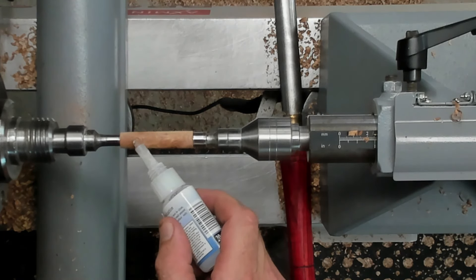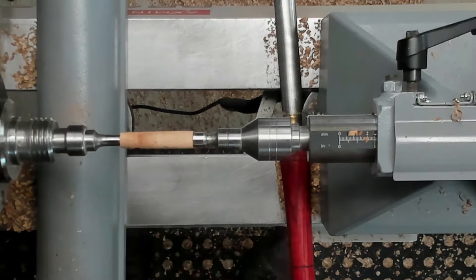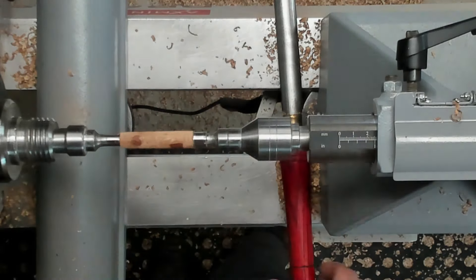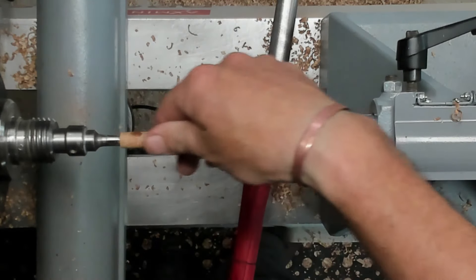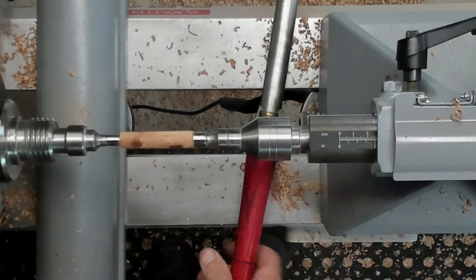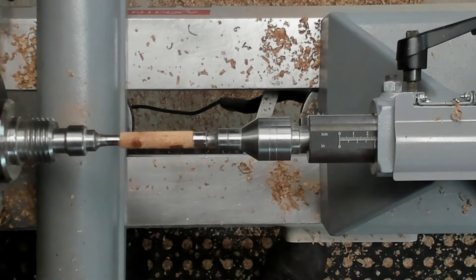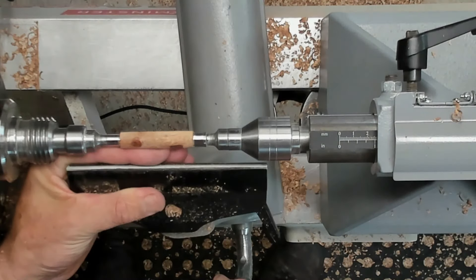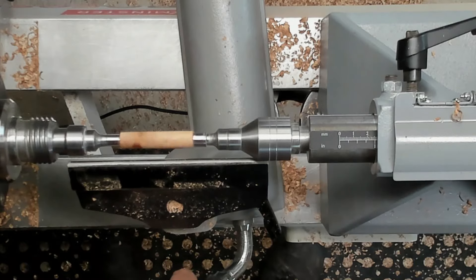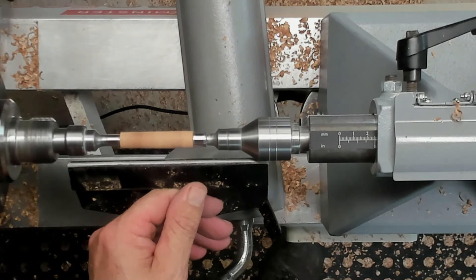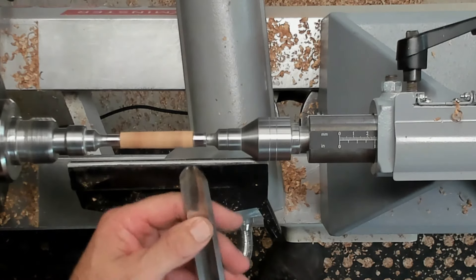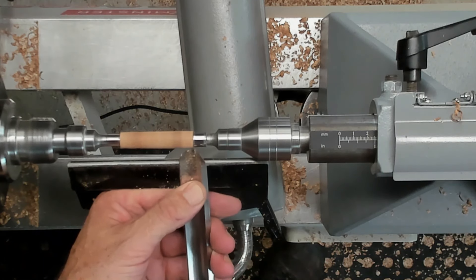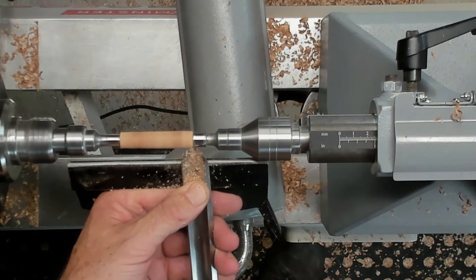Nope, just made a boo-boo there. I forgot I need the wider bushing because it's a streamlined kit. The center band is wider than the bottom. Now back on track.